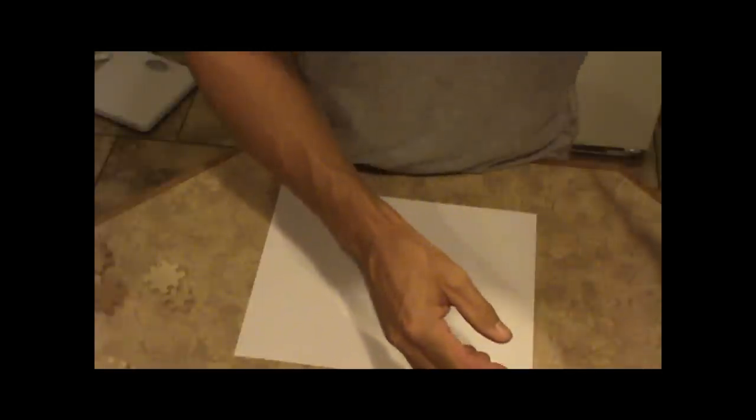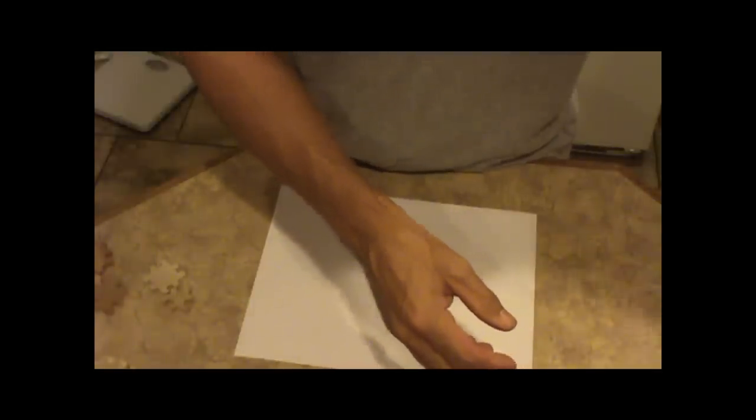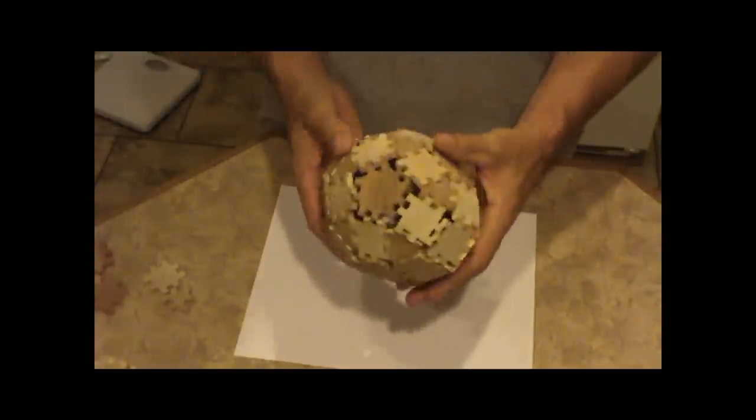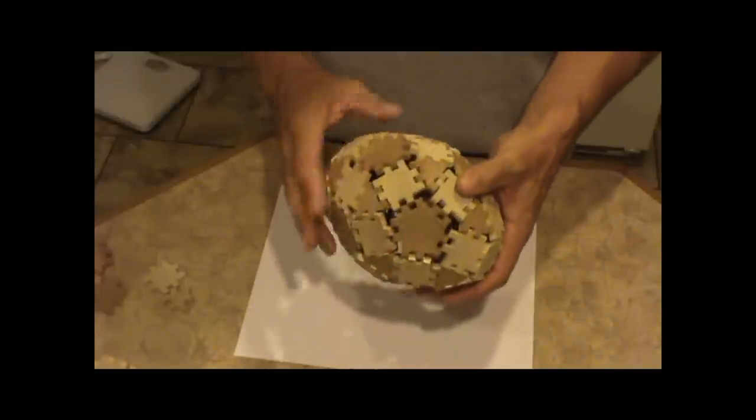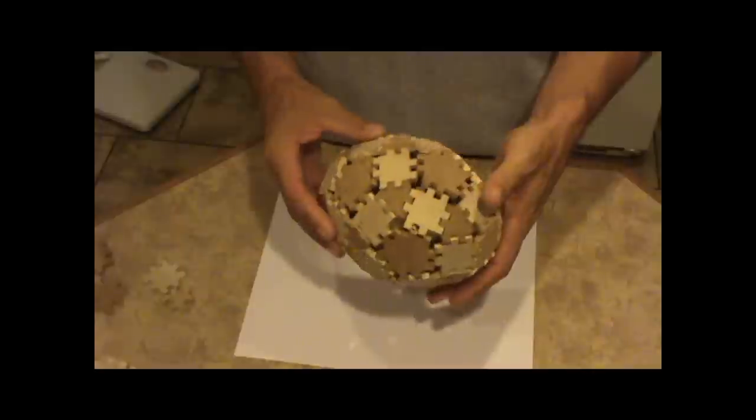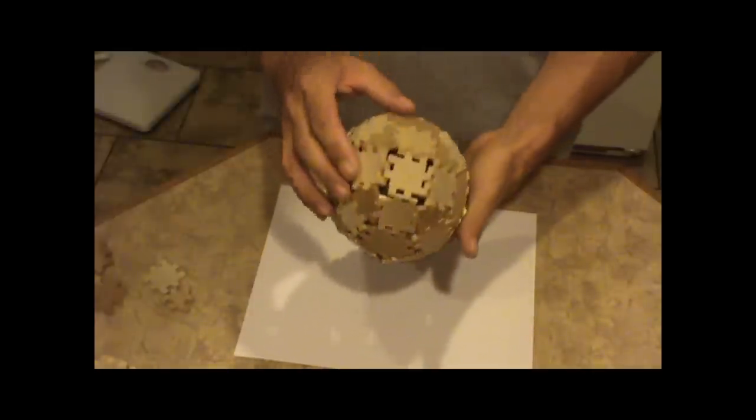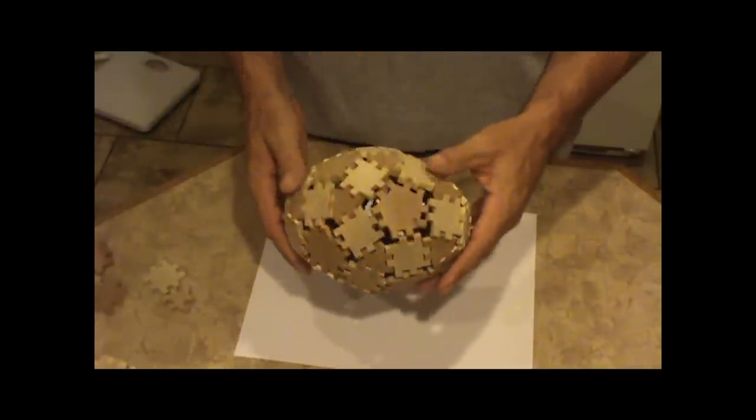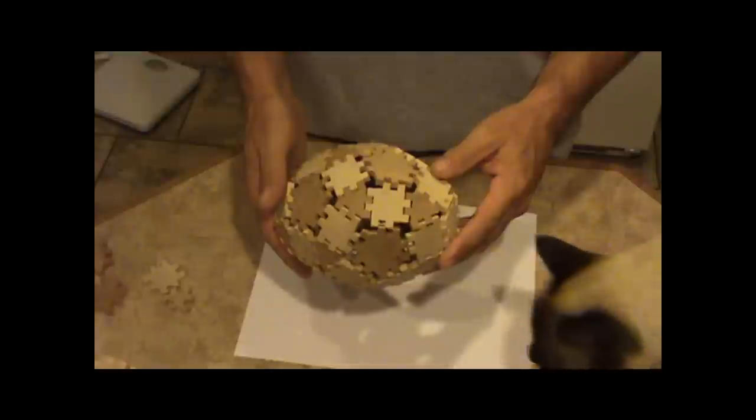And I've got this one. I thought it's neat because it's shaped like an ellipse instead of a sphere. It's got 50 parts. Squares, triangles, pentagons.